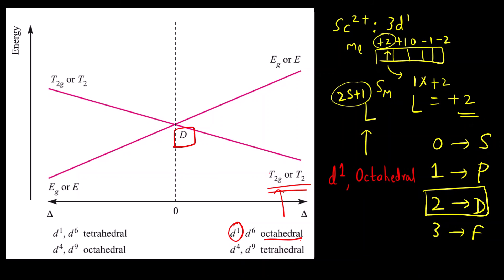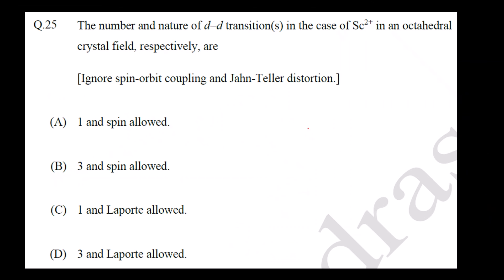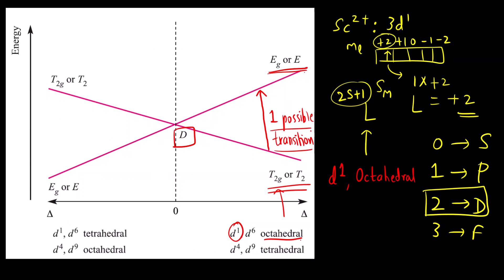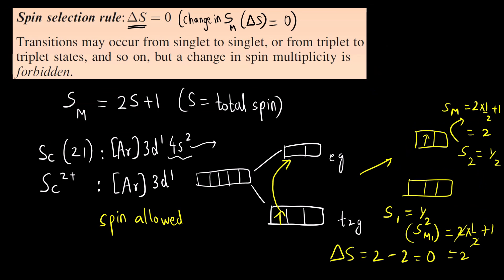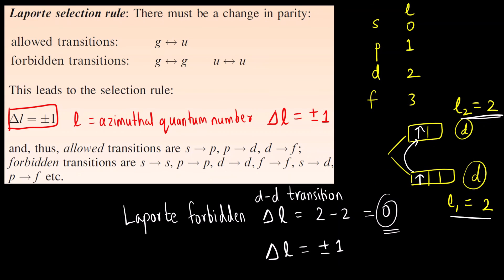There is only one possible d-d transition, from T2g to Eg, because there are only two energy levels. So the answer is 1 transition, and it is spin allowed. Options C and D are incorrect because the transition is Laporte forbidden, not Laporte allowed. The correct answer is option A: 1 and spin allowed. I hope you have understood the solution — how to find out the ground state term, the spin selection rule, and whether a transition is spin allowed or forbidden, and Laporte allowed or forbidden. Thank you.